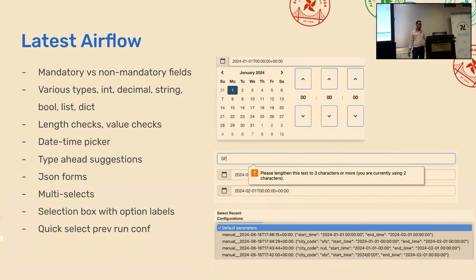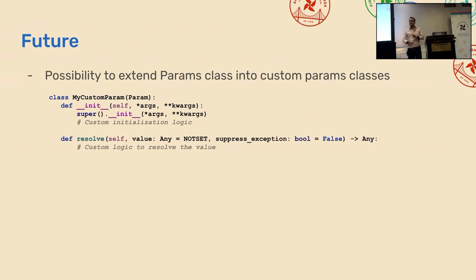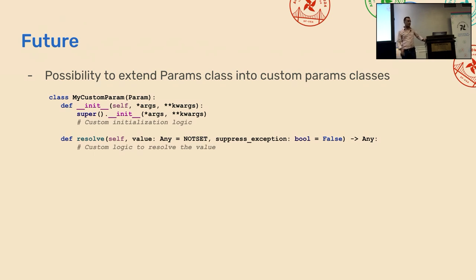One thing we considered when building this feature was allowing people to extend it by writing their own custom params for use cases not covered by the JSON Schema DSL — by subclassing Param and implementing the validate and resolve methods. That may not be needed yet, but could be useful in the future. I was also talking to James, and he mentioned that at some point we should look at getting rid of dag_run_conf as well, which is a different concept but very similar to DAG params. Thank you.